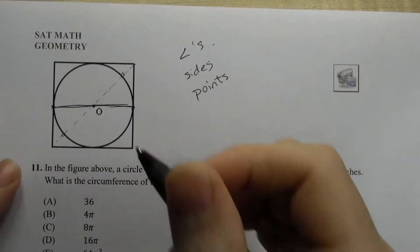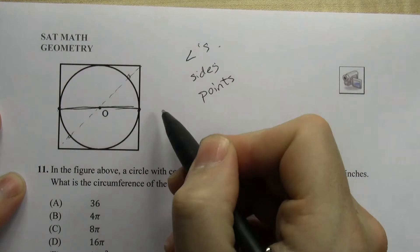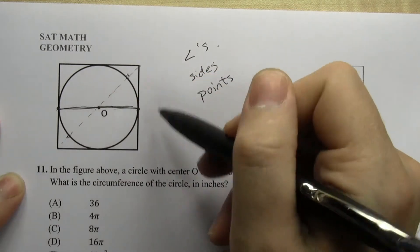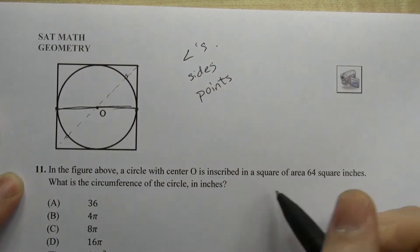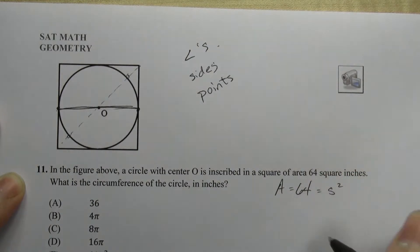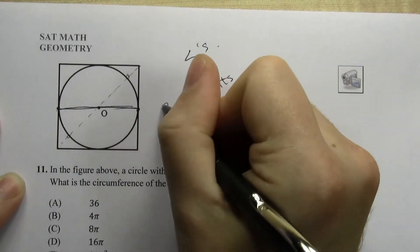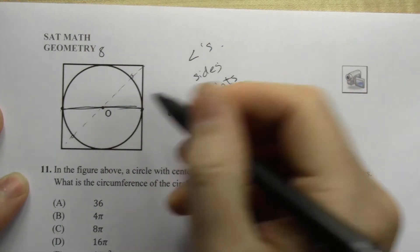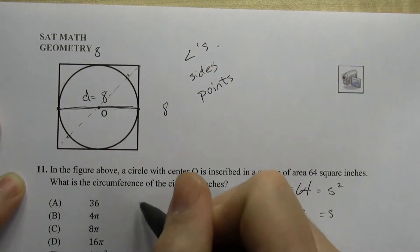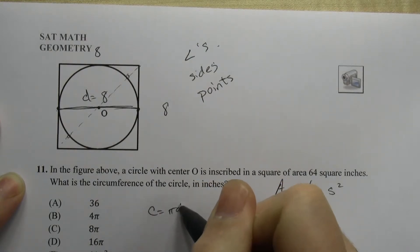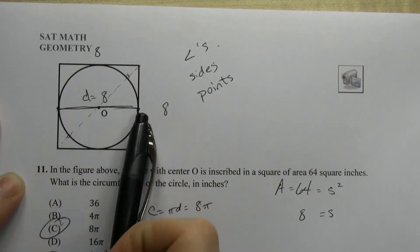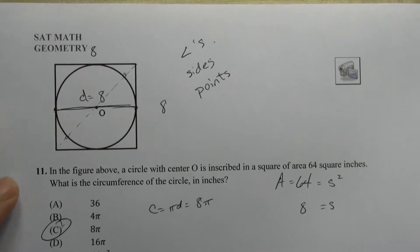That gives us a line that's relevant to both shapes: it's the diameter of the circle, which is what we need, and it's also the length of the side of the square. We know the area of the square is 64 square inches, and area equals s², so s equals 8. The diameter equals 8, so the circumference is πd, which is simply 8π.